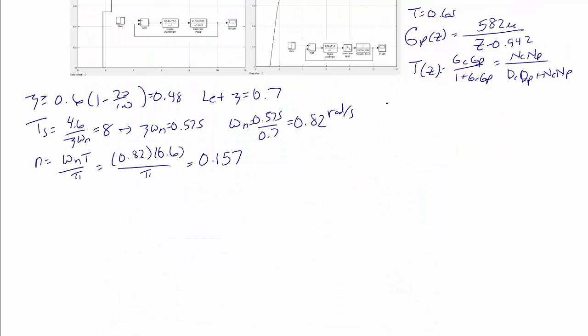So delta d of z, our desired characteristic equation, is z minus 0.7 plus j 0.2 times z minus 0.7 minus j 0.2, which equals z squared minus 1.4 z plus 0.53.